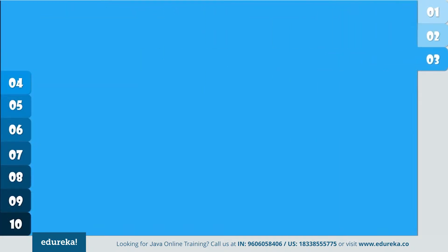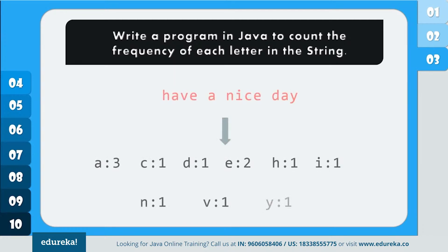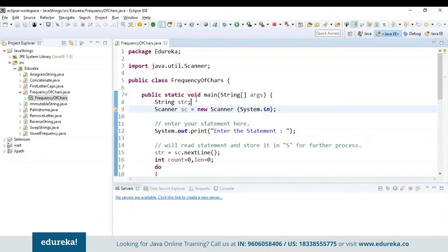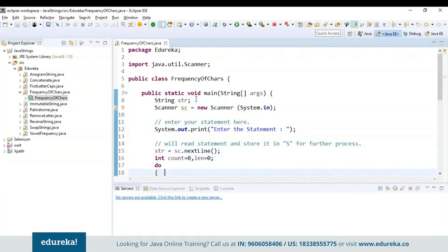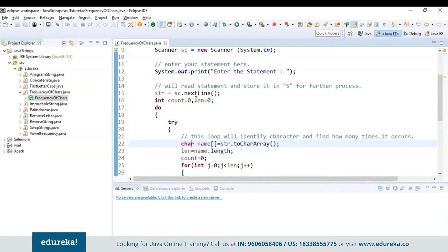Now let's see the next program. The problem statement says: write a program in Java to count the frequency of each letter in the string. You have to check the frequency of the characters present in the given string. For example, for the statement 'have a nice day', it displays frequency accordingly — the occurrence of A is 3, C is 1, D is 1, H is 1, and so on. First I have created a string variable and used a scanner class to read the input, initializing the count and length variables to 0, and I have used a try method to identify the count of characters present in the given string.